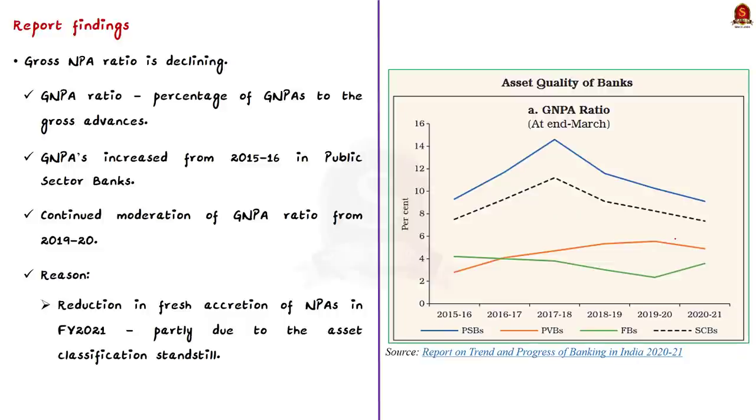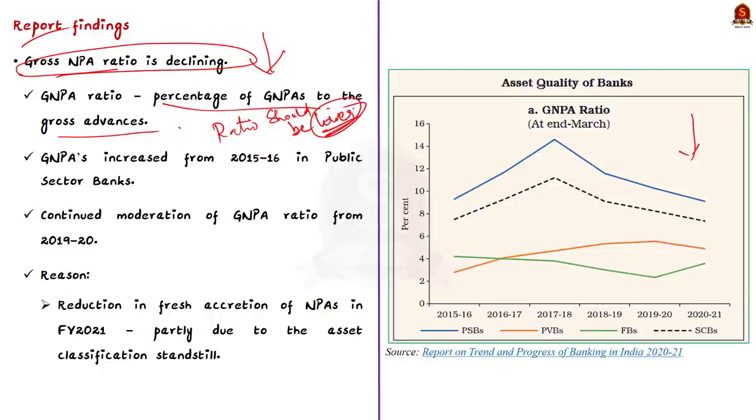Now let us see what the report has to say about it. See first, it mentions that gross NPA ratio is actually declining. The gross NPA ratio is the percentage of gross NPA to the gross advances. The more the ratio, more NPA. So ideally, the ratio should be lower. If you remember, from 2015 to 16, gross NPAs were on a rise in scheduled commercial banks, especially in public sector banks. It crossed 11% in 2017 to 18. But now according to the report, it is declining. This moderation began in 2019 to 20 and has continued in 2021 also. And by end of March 2021, it reached 7.3%. Provisional data also suggests that there is further moderation by September 2021 and the ratio reaches 6.9%.